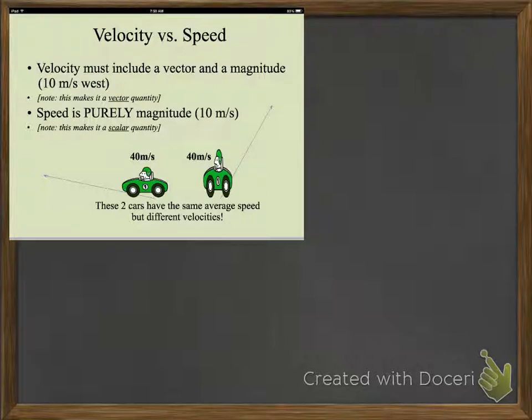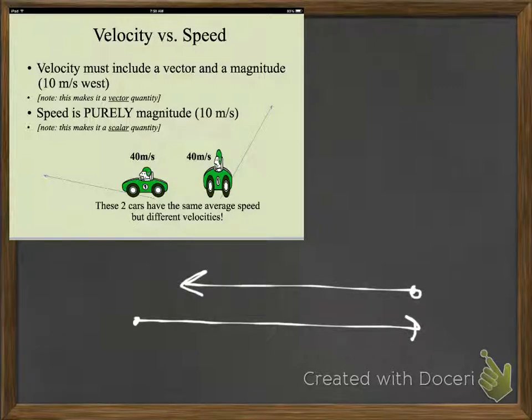Speed is scalar. Velocity is vector. So you can have two objects that have the same speed but different velocities if they're going in different directions. This becomes important because if you go one direction and another, we'll finish, we'll pick up with this tomorrow. Have a good day.